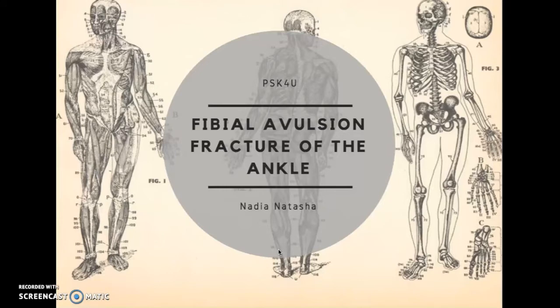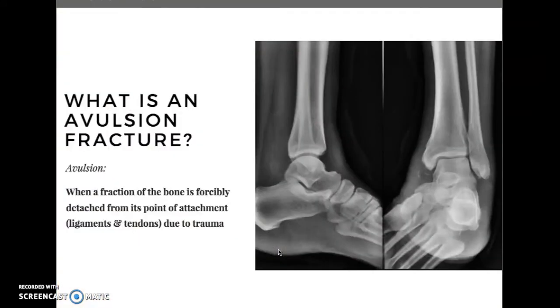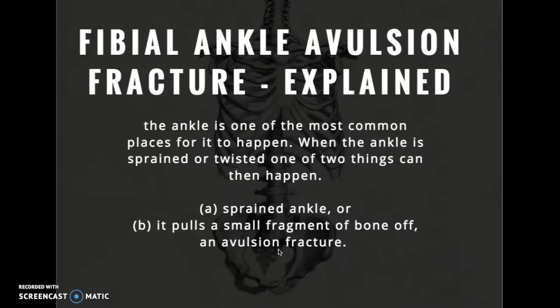Fibular avulsion fracture of the ankle. An avulsion fracture occurs when a portion of the bone is forcibly detached from its point of attachment. Avulsion fractures can occur anywhere in the body, and the ankle is the most common place for it to happen.